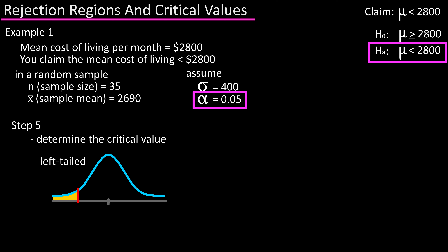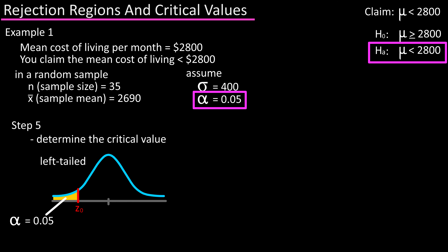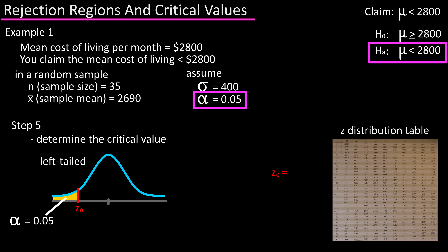Step five: determine the critical value. Since this is a one-tailed, left-tailed test, there will be only one critical value. Since alpha equals 0.05, we need to find the value for z-naught in a z-distribution table where the area to the left equals 0.05. That value is negative 1.645, so that is our critical value, z-naught.